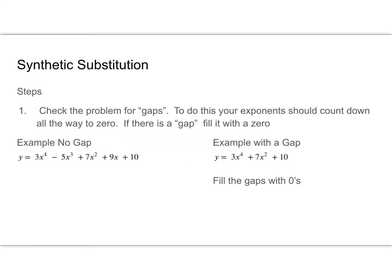Let's move on to synthetic division. The first thing we have to do — step 1 — is check the problem for gaps. To do this, your exponents should count down all the way to 0. If there is a gap, we fill it with a 0. In this first instance, notice our exponents: we go from 4, 3, 2, technically 1 here, and the constant is technically x to the 0.